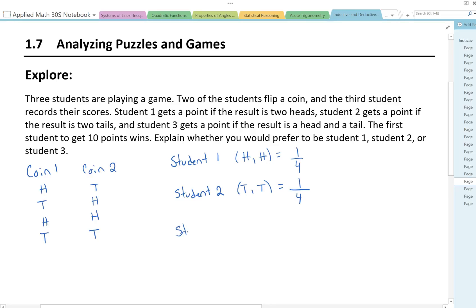And then student 3 gets a point if the result is a head and a tail. The first student to get 10 points wins. So student 3 heads and tails—it doesn't specifically say what order.